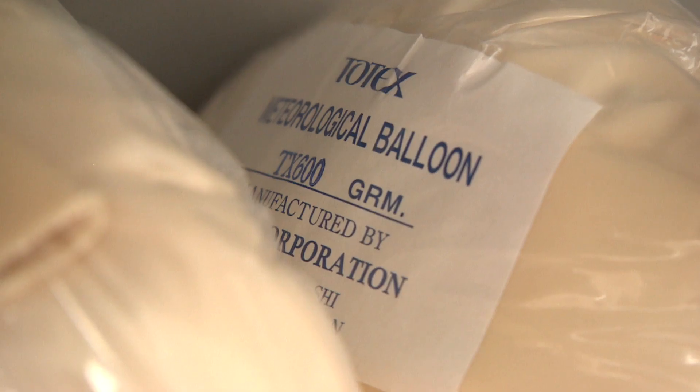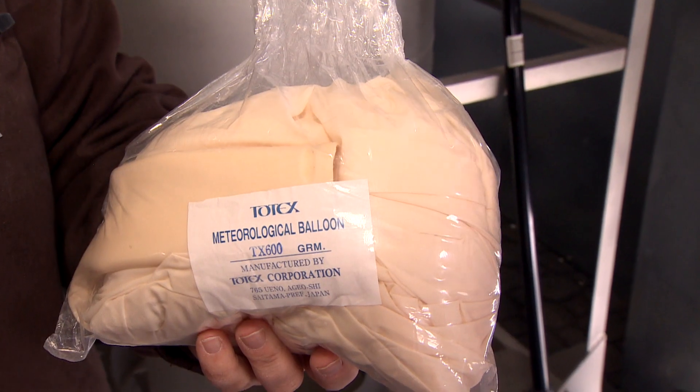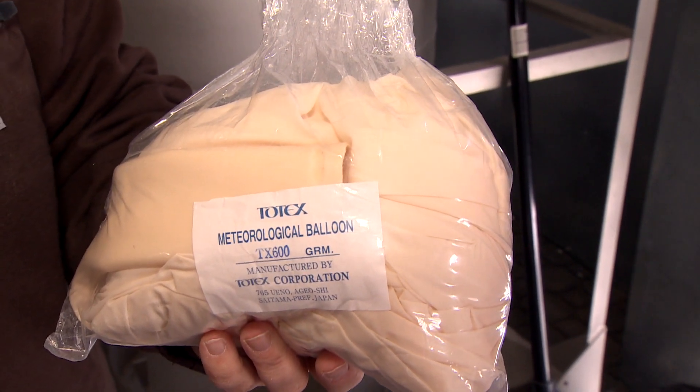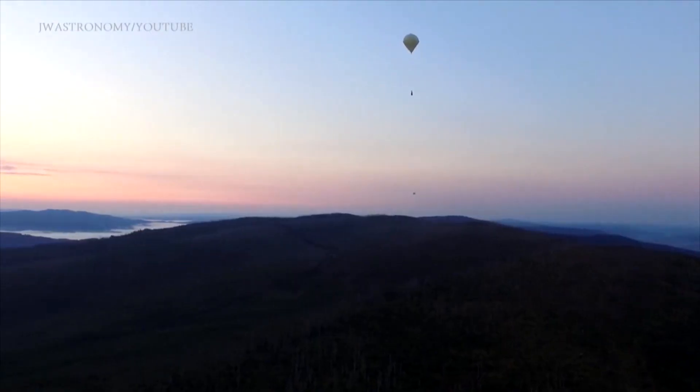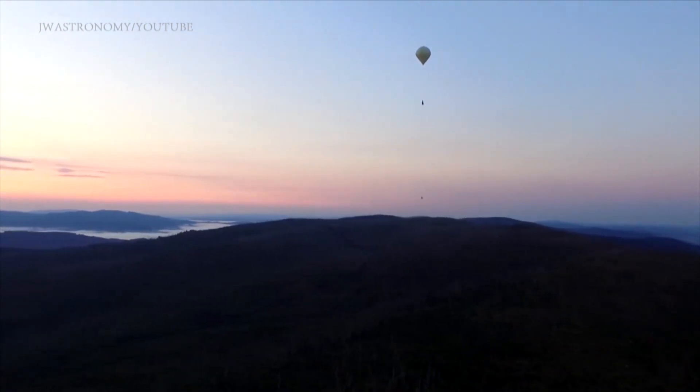So this is the balloon here. Can you tell me what it's made out of? They are made of natural latex. When we blow it up, it will be about a metre, metre and a half, or up to two metres big. As it goes up, it continues to increase and increase in size until the end of the flight when it bursts.